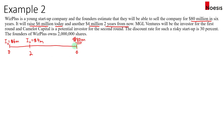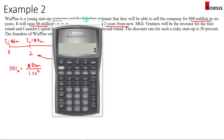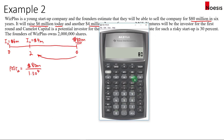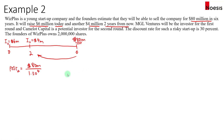First, we need to find the post-money valuation in year two. We'll discount the eighty million back to year two at thirty percent for four years — because we're discounting from year six back to year two. So FV is eighty million, N equals four, IY is thirty percent, PMT is zero. Computing PV gives us a post-money valuation of twenty-eight point zero one million dollars.